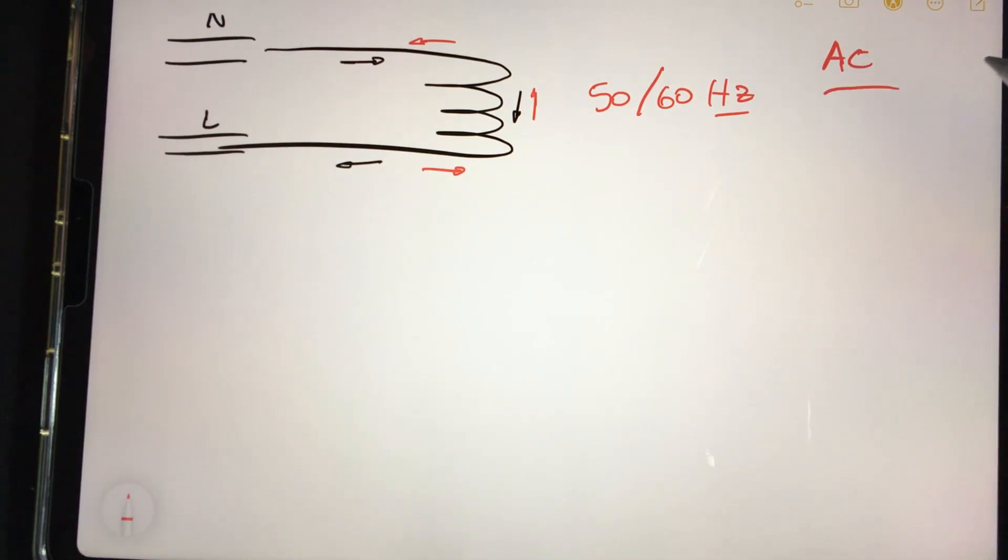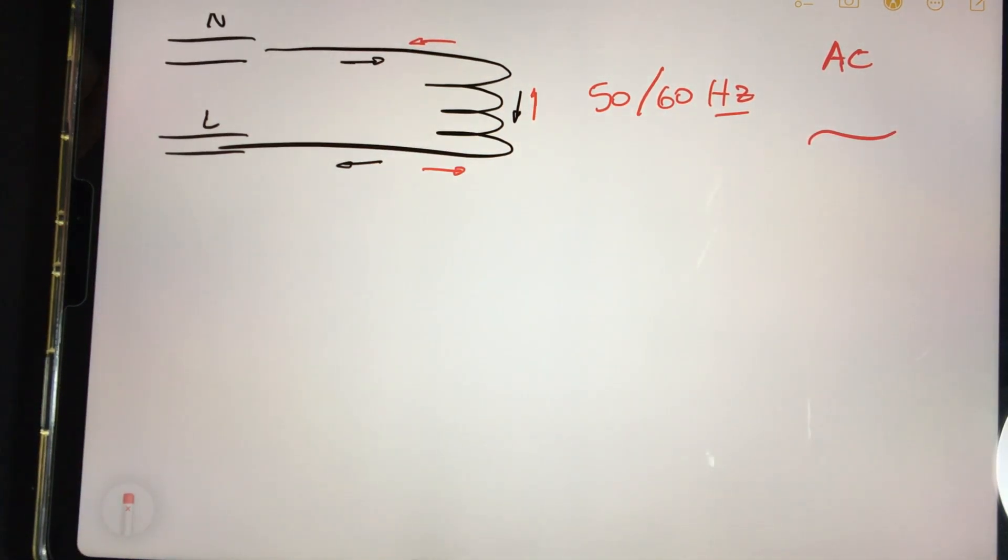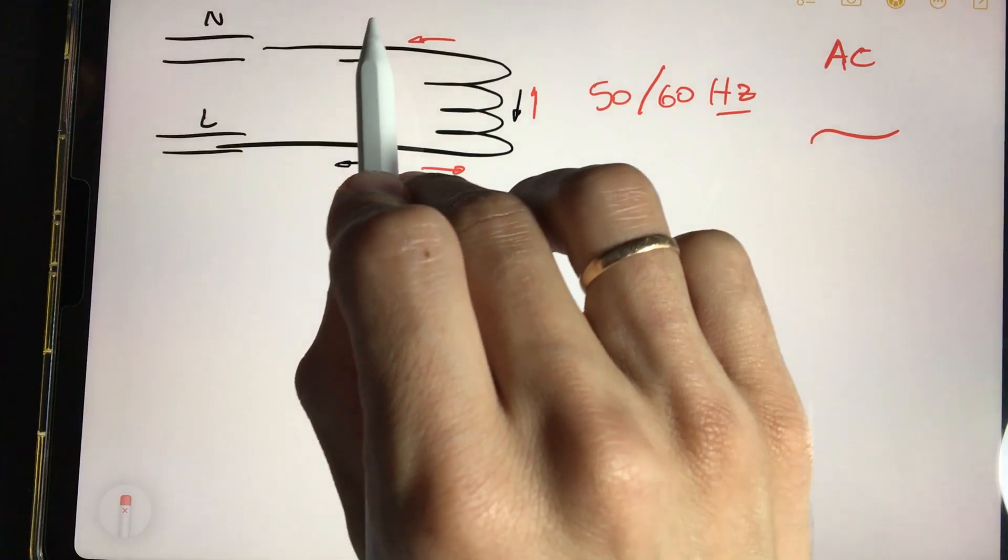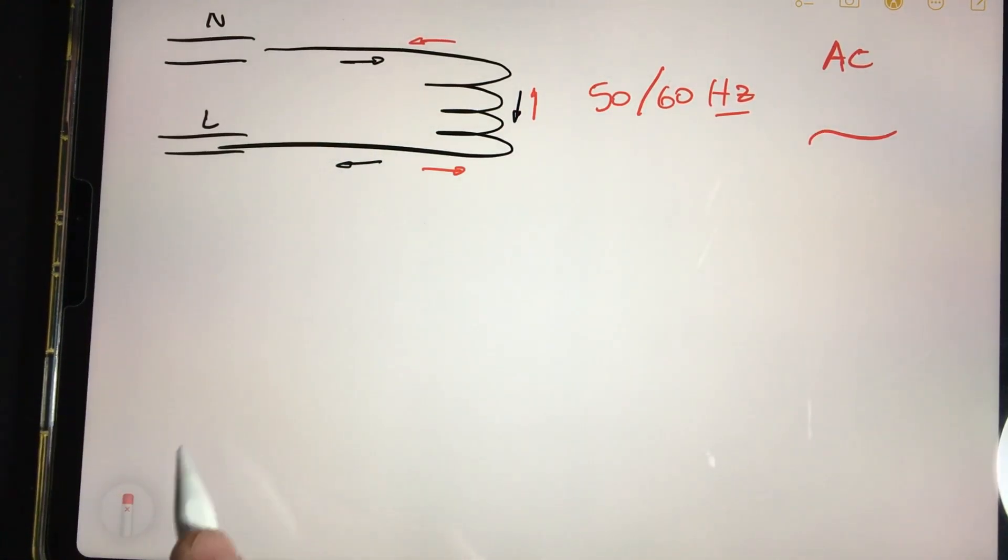This represents alternating current. A symbol that is also used to represent alternating current is this wave. Let's see if we improve a bit. It is used to symbolize alternating current because the electrons enter from one side and the other.